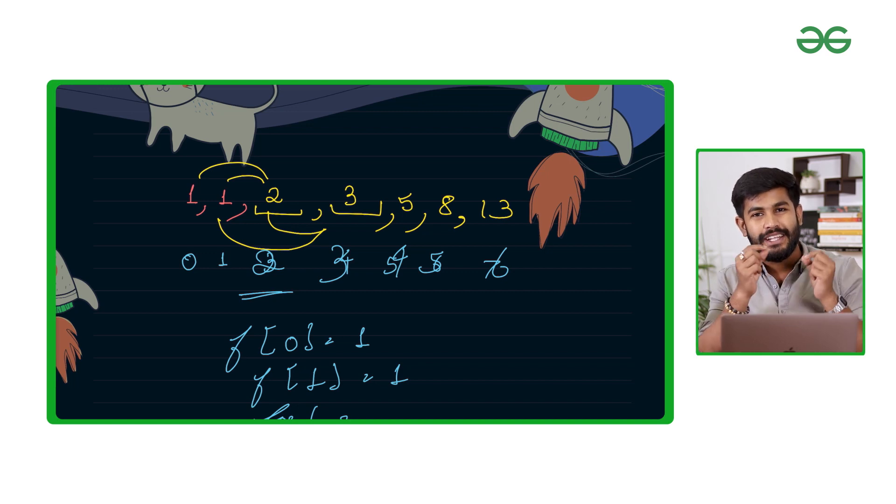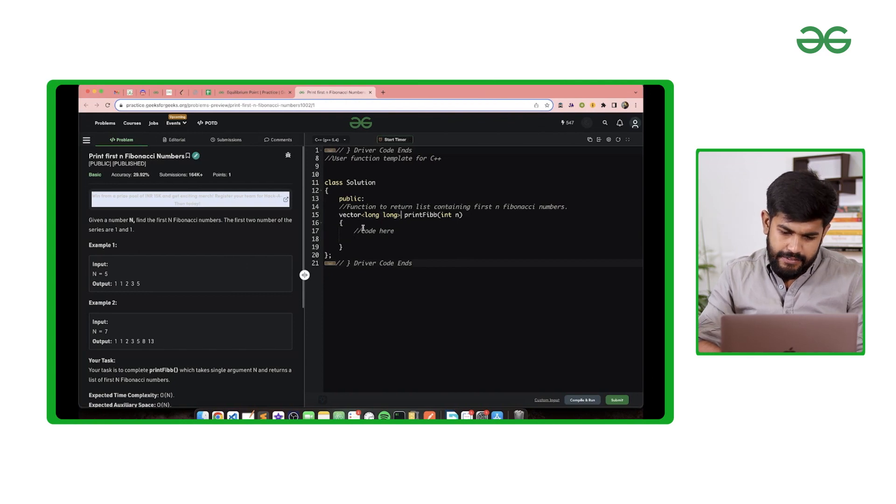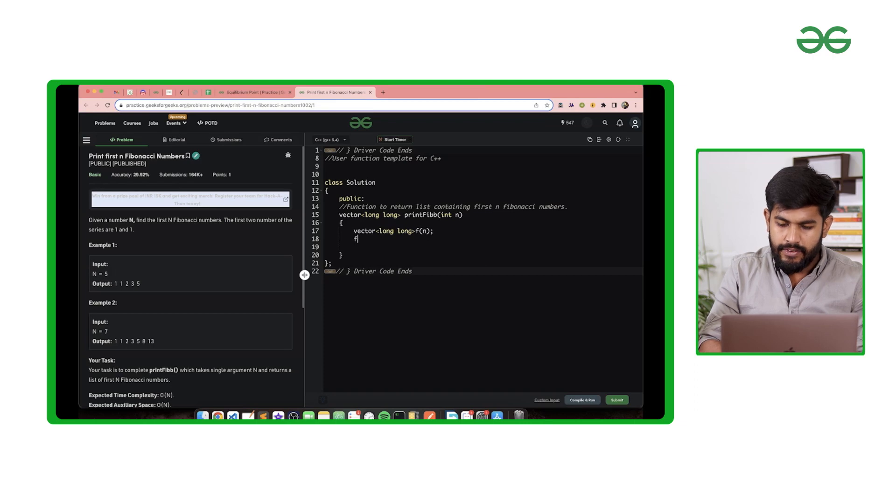Let us move to the coding part. I would name it as f because of this Fibonacci series name. I would say f of size n, and then f of 0 equals f of 1 equals 1. Then we would say for int i equals 2, i is less than n, i plus plus, and then f of i equals f of i minus 1 added to f of i minus 2.